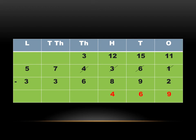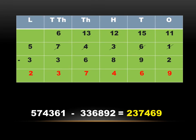Coming to the thousands column, again three is smaller than six, so it is not possible to subtract six from three. So one will be borrowed from the ten-thousands place. At the thousands place we have thirteen, and at the ten-thousands place we have six. Thirteen minus six is equal to seven. At the ten-thousands place, six minus three gives three.